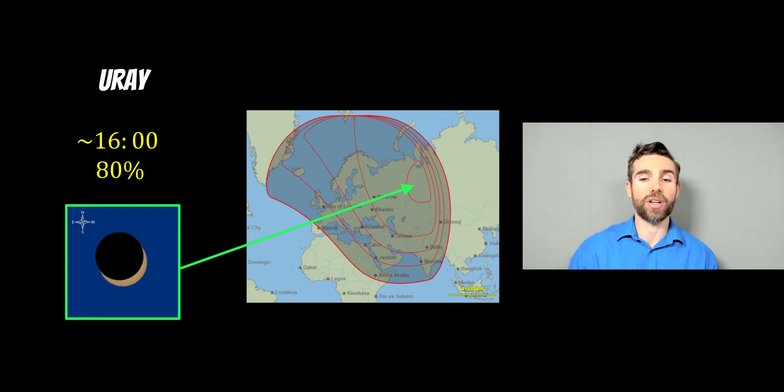So the best locations really are a bit further east away from Europe. But in Europe, most of Europe, apart from the lower parts of Spain and Portugal, you will be able to pick out some of this partial solar eclipse.